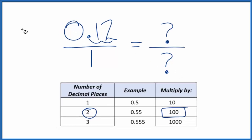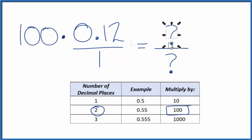So 0.12 times 100 gives us 12, which is a whole number. But 12 is not equal to 0.12. We have to multiply both the top and the bottom by 100.